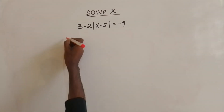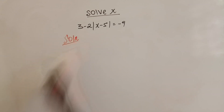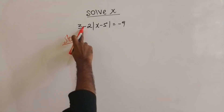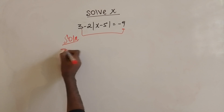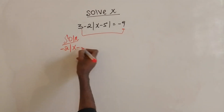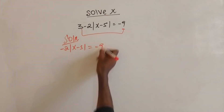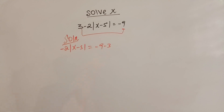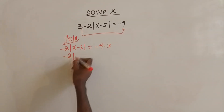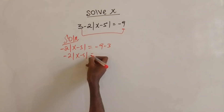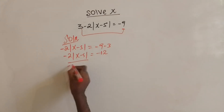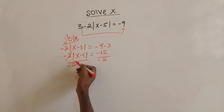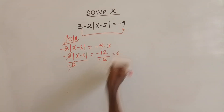Solution. First, we have to move the 3 to the right side. It becomes negative 2 times the absolute value of x minus 5, which is equal to negative 9 minus 3. That gives us negative 2 times the absolute value of x minus 5 equals negative 12. Then we divide both sides by negative 2. Negative 2 cancels, and this becomes 6.